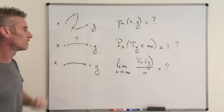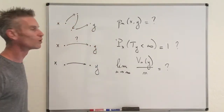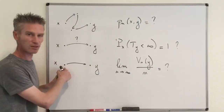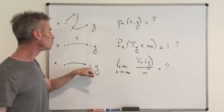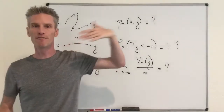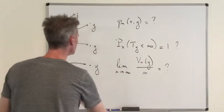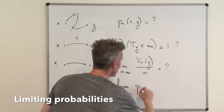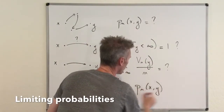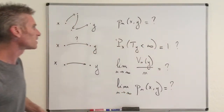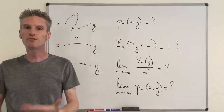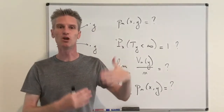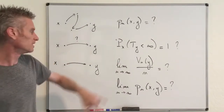The fourth and last question is about the limiting probabilities. The question is: if we start from state X, what is the probability that we will be in state Y at some very large time N? What we want to compute is the limit as N goes to infinity of P^N(X,Y). These are the four main questions about a discrete-time Markov chain. The mean recurrence time question is equivalent to question three — answering question three also gives you the mean recurrence time.